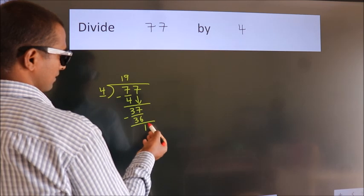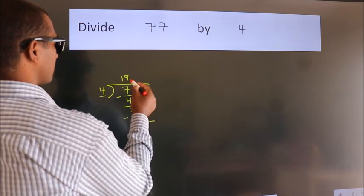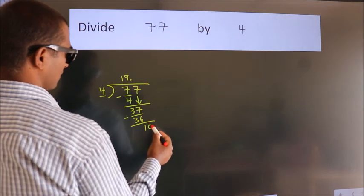After this, there are no more numbers to bring down. So what we do is put a dot and take 0, giving us 10.